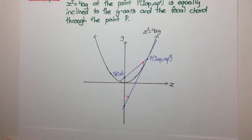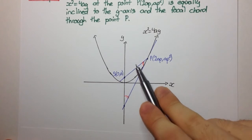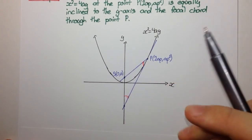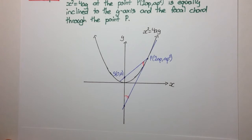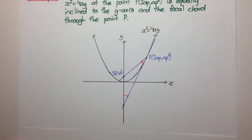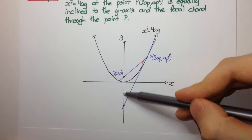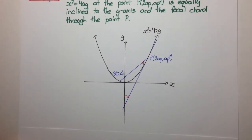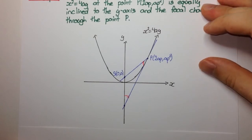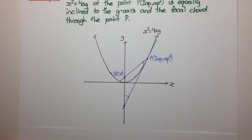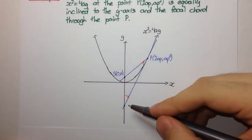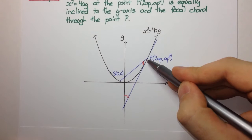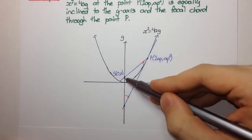There are a couple of ways to approach this. We could use the gradients of these lines and use the angle between two lines formula, tan theta equals the absolute value and so on. But we run into a problem when we use the gradient of the y-axis, because the gradient is infinite and we can't really work with an infinite gradient. So the best way to do this is to consider the triangle formed by the focal chord, the tangent, and the y-axis.